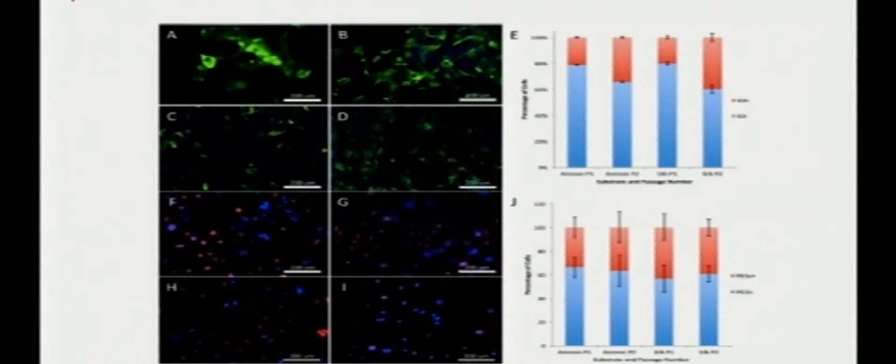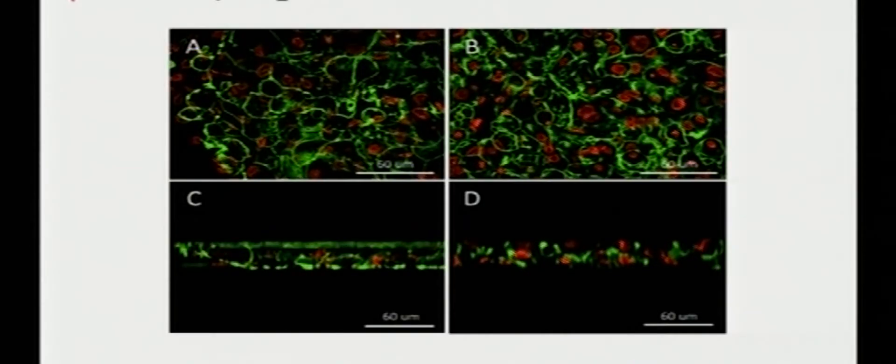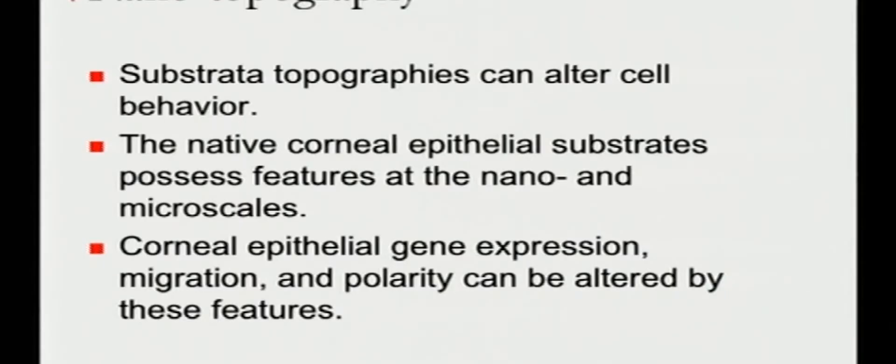Epithelial cells like to grow on the silk films. Here's some light and electron microscopy. And they proliferate very well on these films as well. If you look for stem cell and differentiation markers, basically indistinguishable from amniotic membrane. And you can get them to stratify, just as you can get cells to stratify on amniotic membrane, you can get cells to stratify on silk films as well.